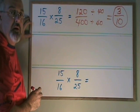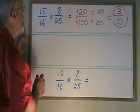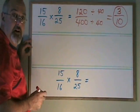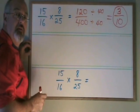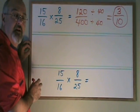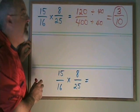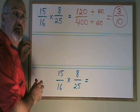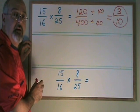But is there another way to do it? Can I find an easier way to do it? We could try reducing the original fractions. If they could be reduced, we'd have smaller numbers and it would be easier to get to the right answer. But 15 over 16 cannot be reduced. 15 and 16 do not have any common factors. And 8 over 25 also cannot be reduced. 8 and 25 do not have any common factors.